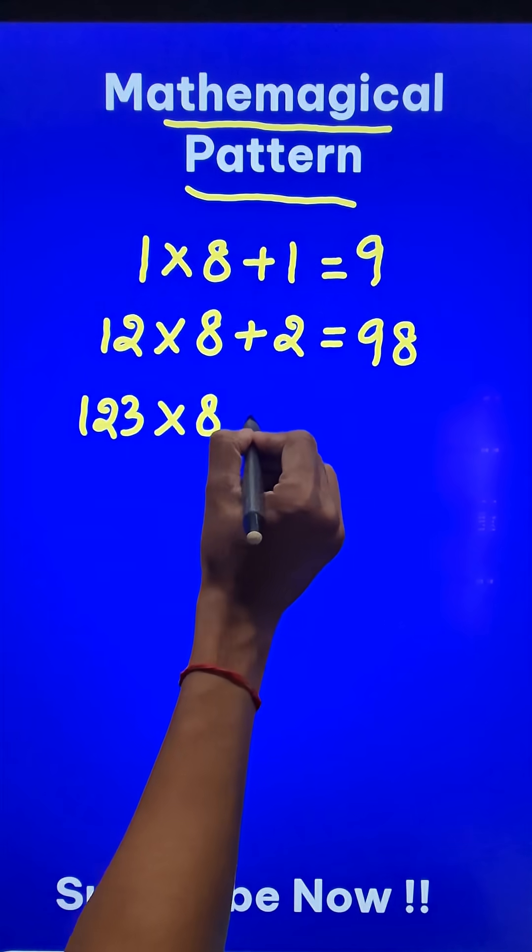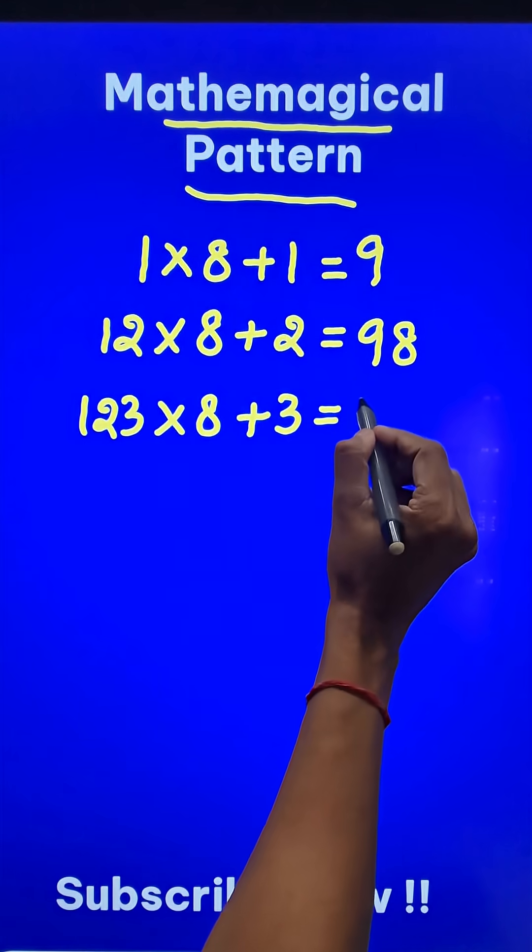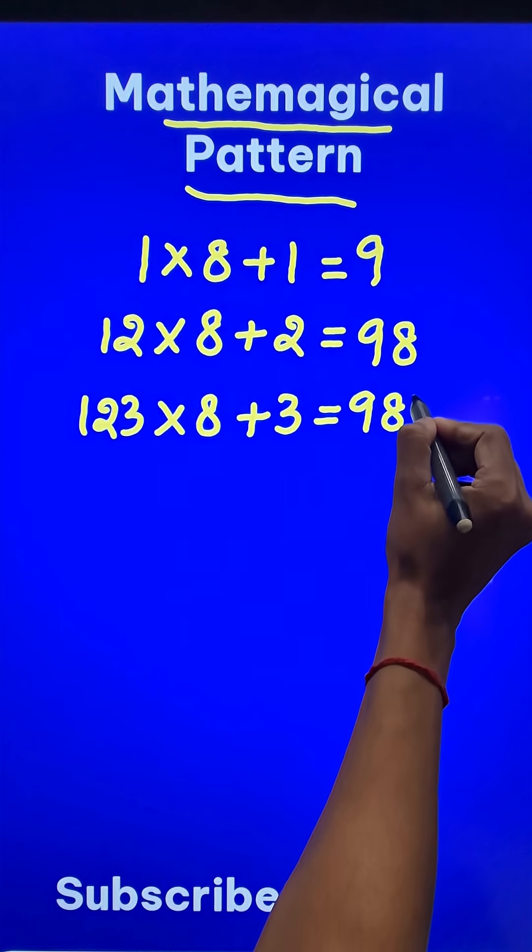123 times 8 and add 3 to the result. You will be surprised to see that this time your answer will be 9, 8, 7.